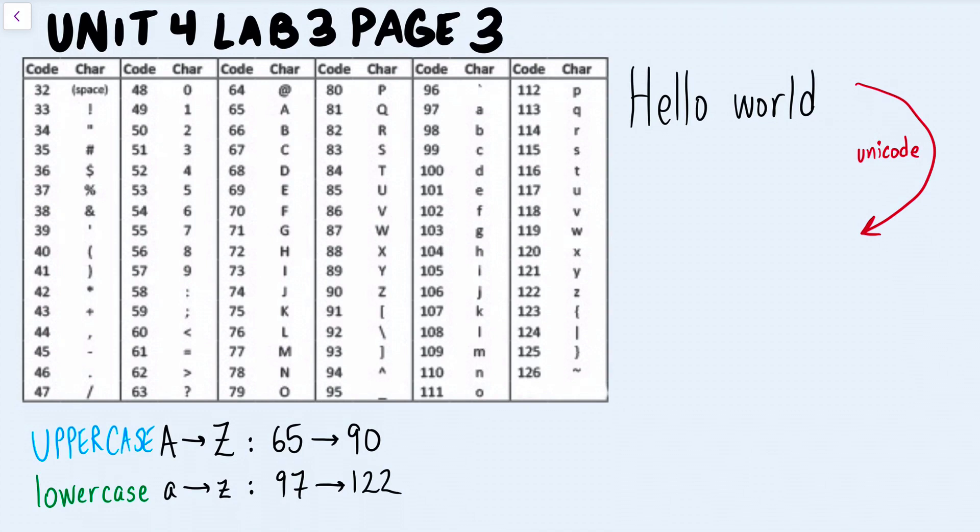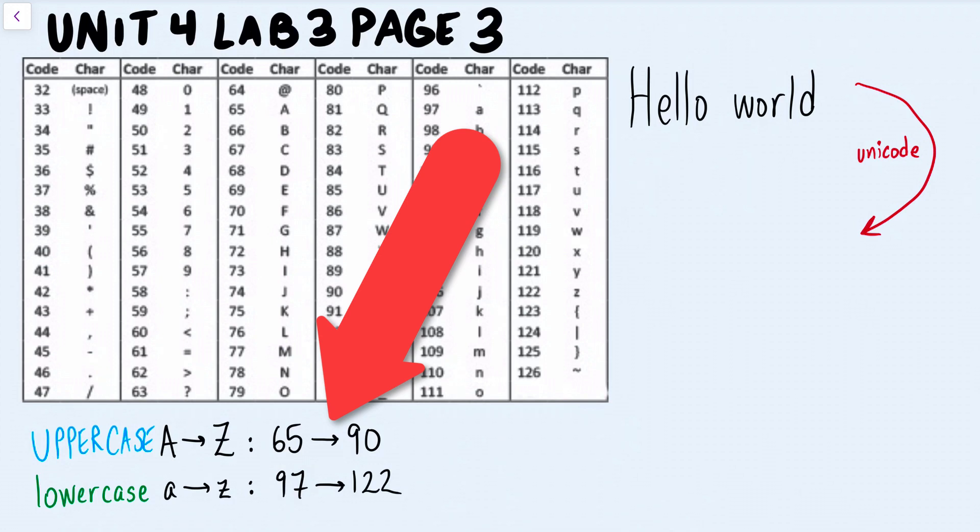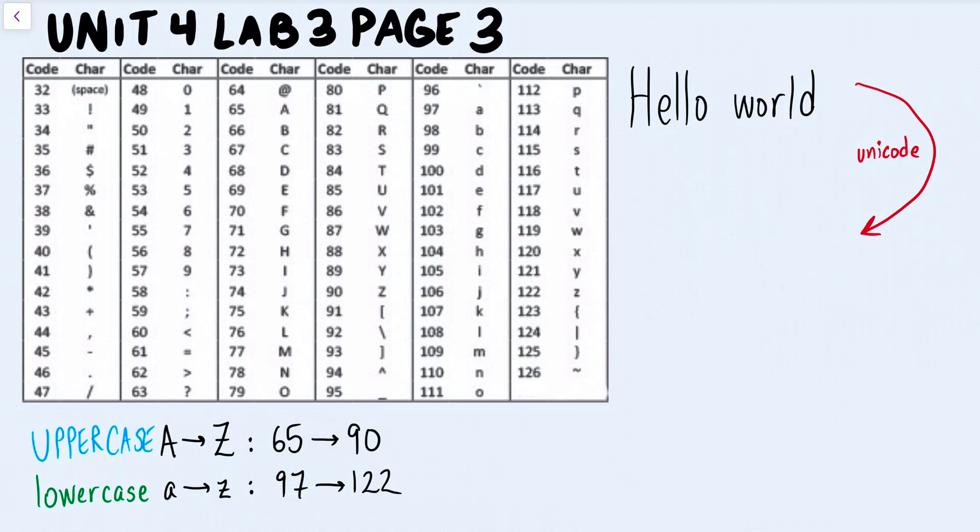With this lab, they're going over Unicode for the first time. It's basically a number representation for every character on your keyboard or every character that could be used in a specific language. In English, for uppercase A through Z we use 65 through 90 in Unicode. They're just numbers that represent letters. For lowercase a through z, we use 97 through 122.